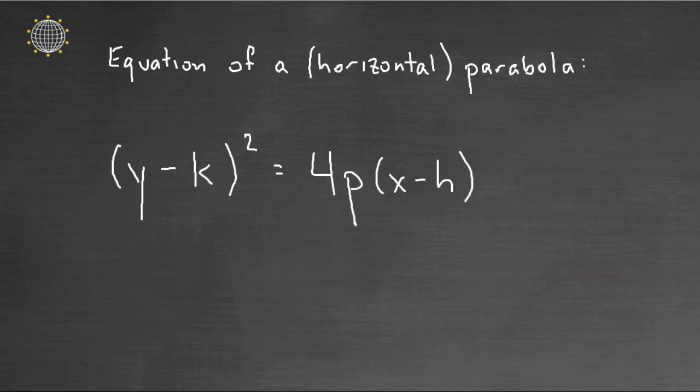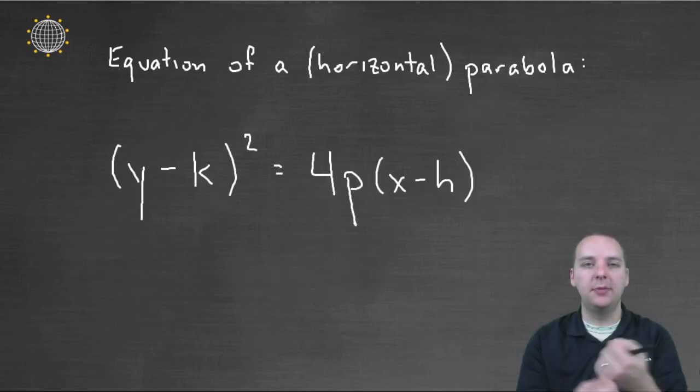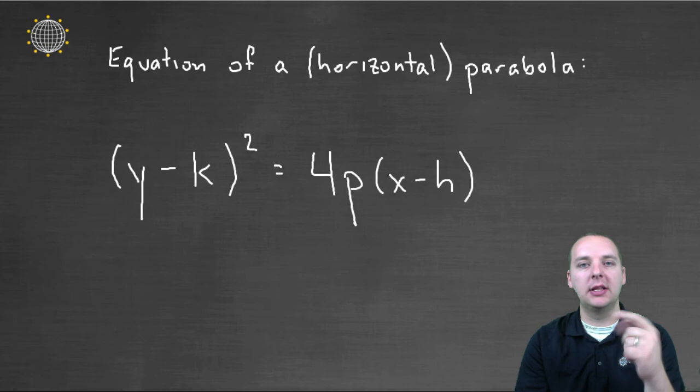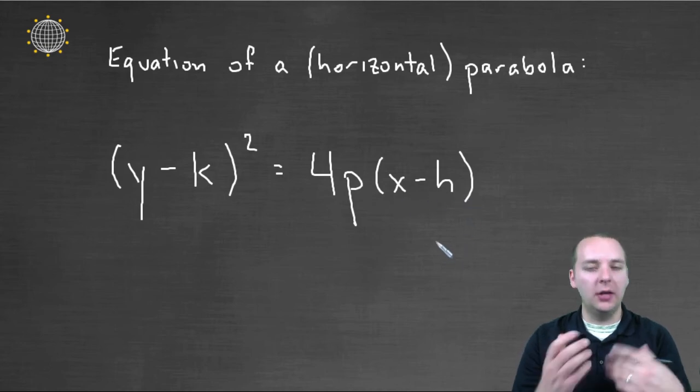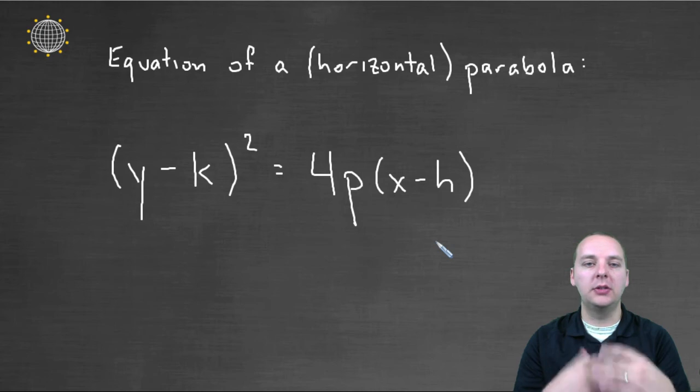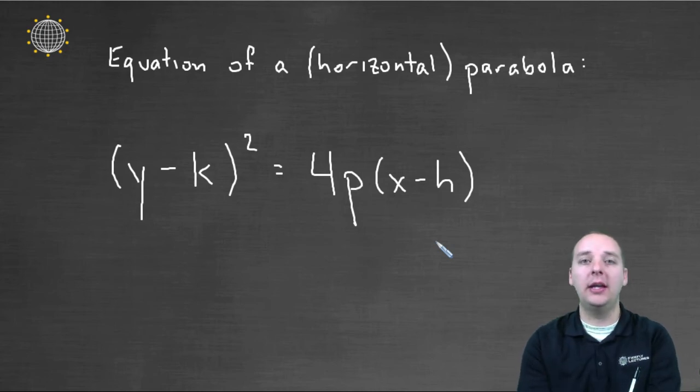Its equation is similar, but obviously the variables have been switched around if it opens left or right. It's (Y minus K) squared equals 4P(X minus H). Okay? So again, we'll go through plenty of examples where we actually write some of these here. I'm just kind of unpacking the theory about why it is what it is.